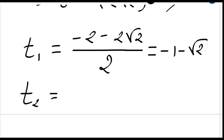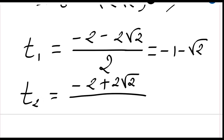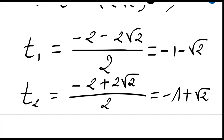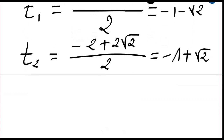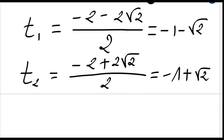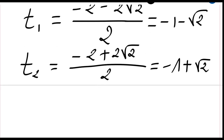And the second solution is t₂, which is minus 2 plus 2 times the square root of 2, divided by 2a — so minus 1 plus the square root of 2. So we have our t with these two values.